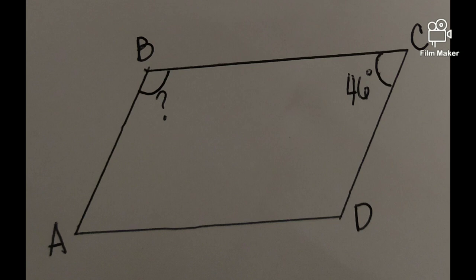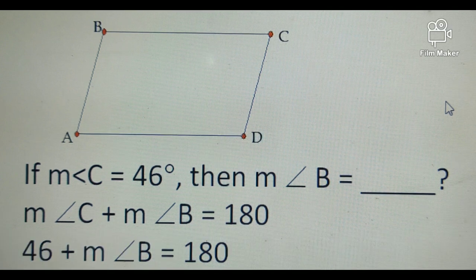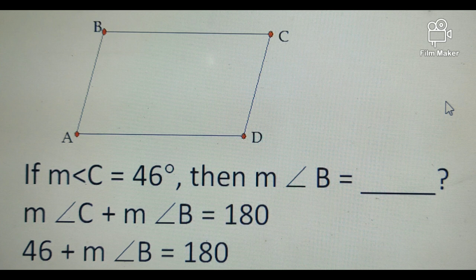Example, this problem. Given angle C, we're looking for angle B. Just remember our property class, wherein consecutive angles are supplementary. So if we add angle C and angle B, they will be equal to 180 degrees. Substitute the given which is angle C of 46 degrees plus the measure of angle B unknown, then equal to 180.